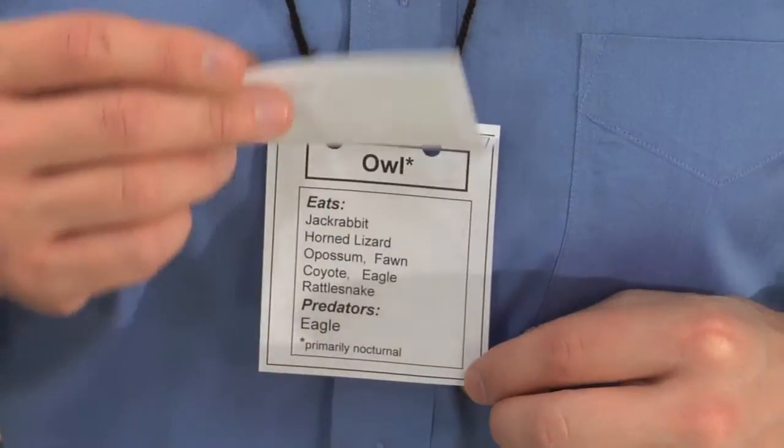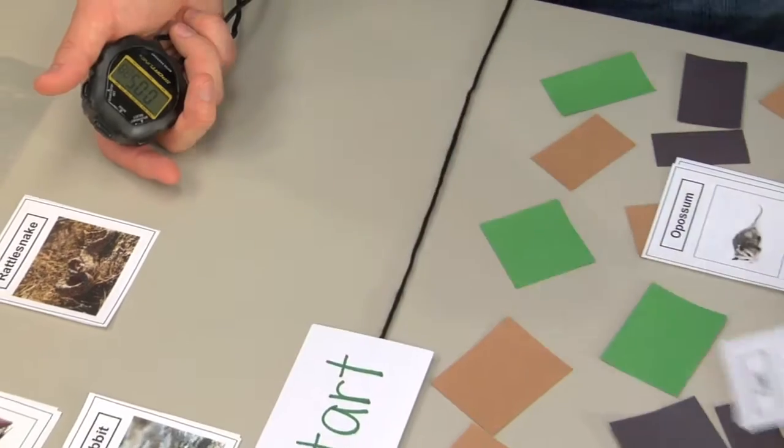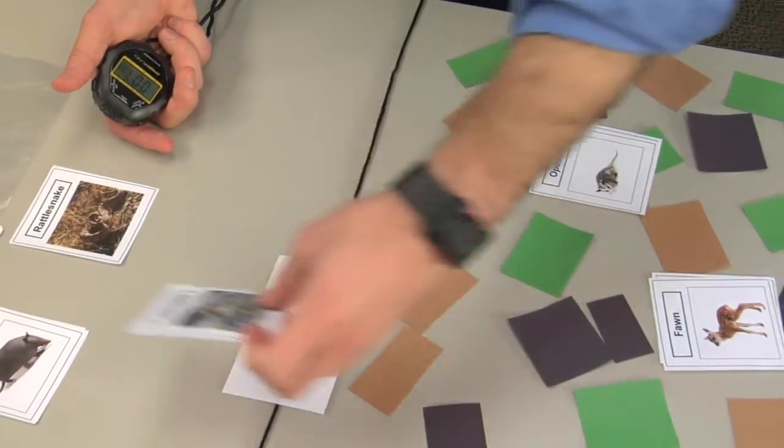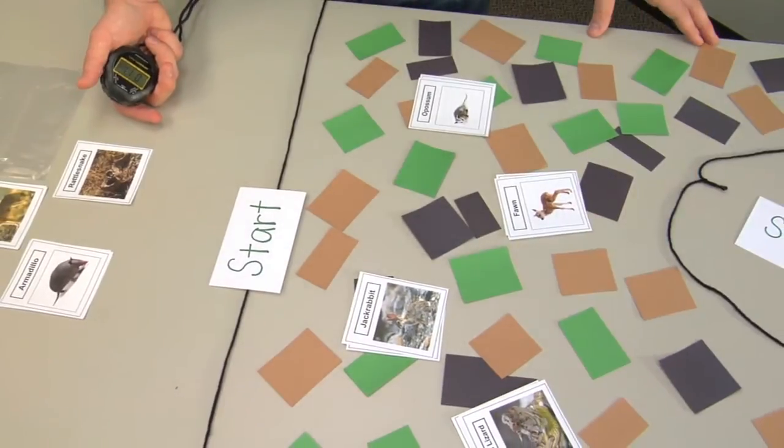Each student needs an organism card necklace and a plastic stomach bag to acquire food. Release groups of students according to animal type and refer to the teacher guide for information about when each group can enter the play area.